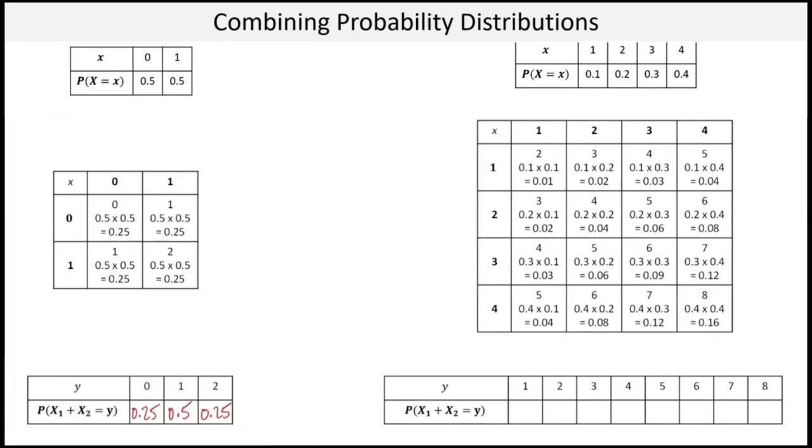And we first look to produce the sample space, all of the possible outcomes after we've combined the scores. And here I have them. The scores should actually go from 2 being the smallest score you might get, to 8 being the largest score you might get. Let's get rid of the 1.